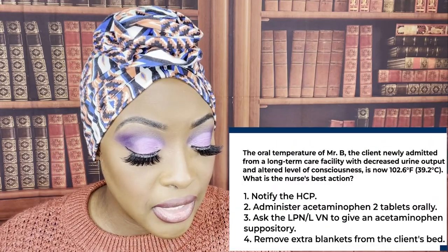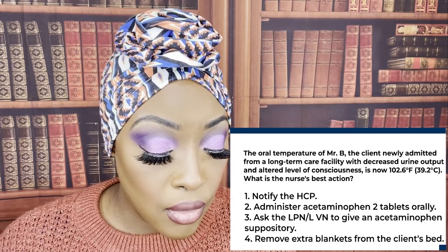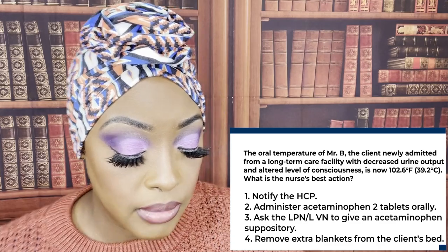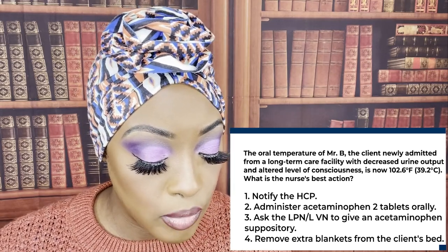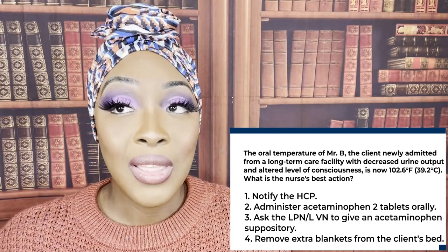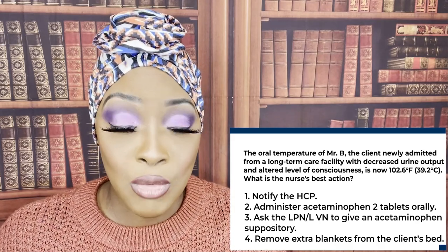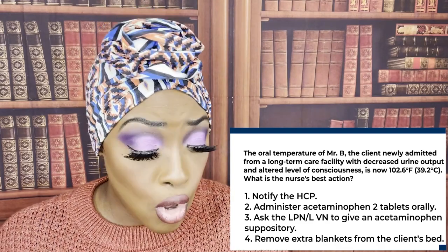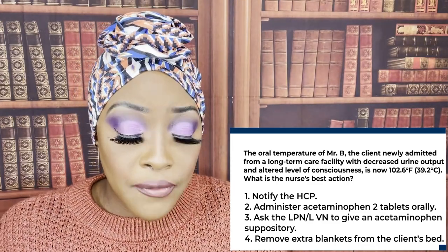The oral temperature of Mr. B, the client newly admitted from a long-term care facility with decreased urine output and altered level of consciousness, is now 102.6 degrees. What is the nurse's best action? One, notify the healthcare provider. Two, administer acetaminophen tablets orally. Three, ask the LPN/LVN to give acetaminophen suppository. Or four, remove extra blankets from the client's bed. The correct answer is one — call the healthcare provider. You've already assessed the patient: decreased urine output, altered level of consciousness, temperature now 102.6. You have something to tell the healthcare provider.